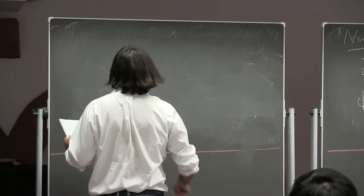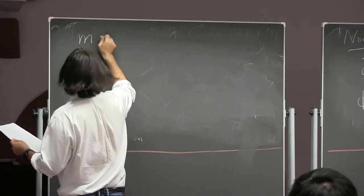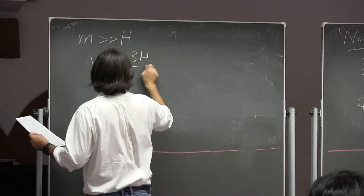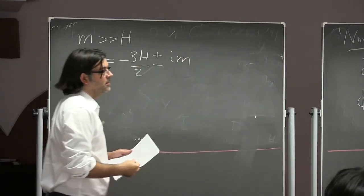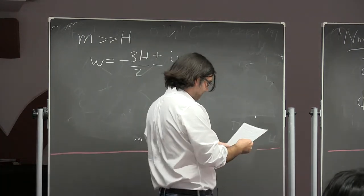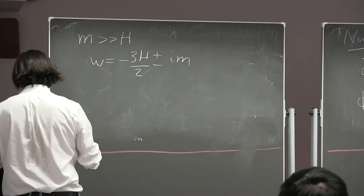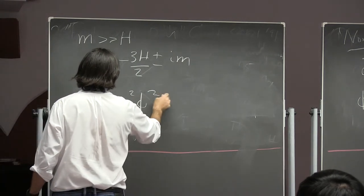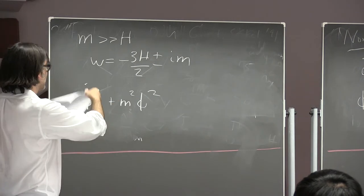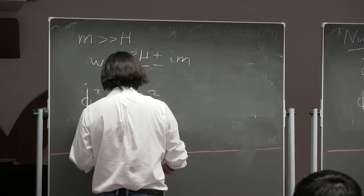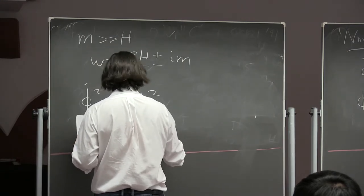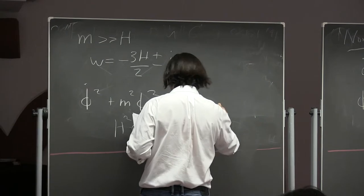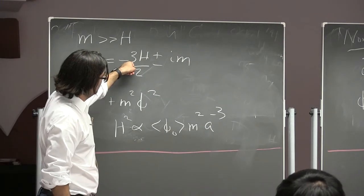On the question of whether H constant is a valid assumption: I was making a simplification to do the calculation more easily. If Hubble is actually evolving, it can be relevant for the slow-roll solution, but is not so relevant for the oscillating solution, because the oscillation time is so rapid on the timescale of the Hubble time. So both qualitative points remain accurate: you start in the slow-roll regime, and once the mass exceeds the Hubble constant you start oscillating and diluting like a^(-3).